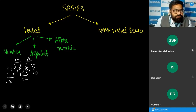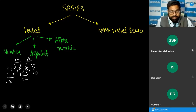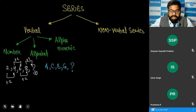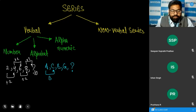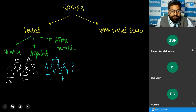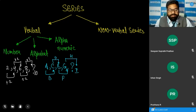In the alphabetical series, for example: A, C, E, G — what will be the next term? I will be the next term. From A to C we are leaving one alphabet B in between, from C to E we leave D, from E to G we leave F, so from G we leave H and get I as the correct answer.